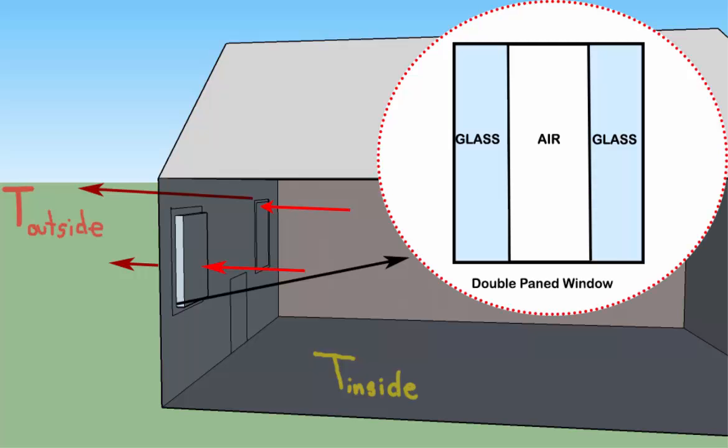Now when we install a double-pane window, we have three layers that the heat must flow through, so the R-value will be higher because there is more resistance to heat flow.